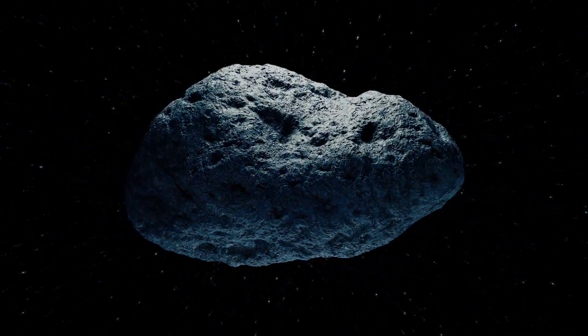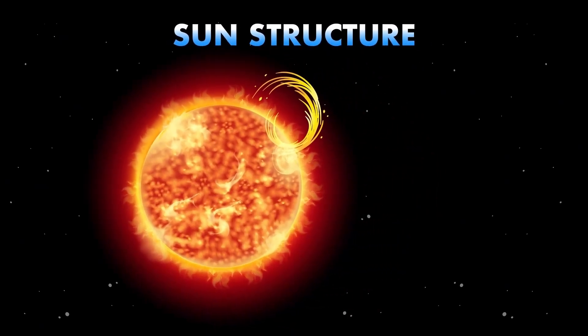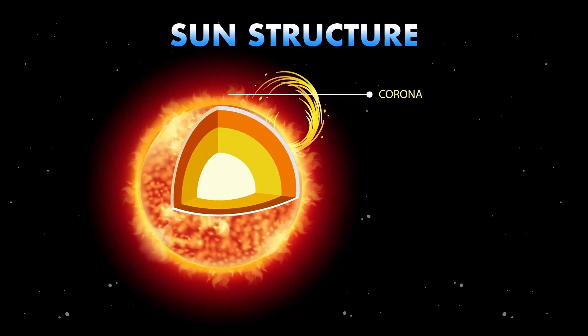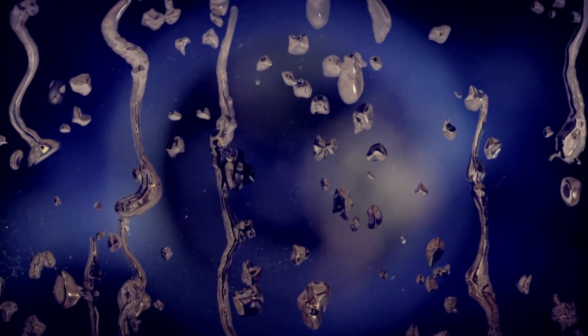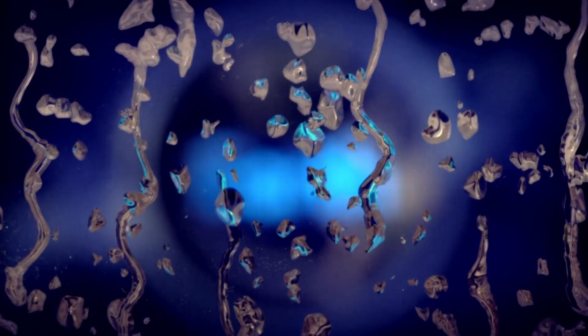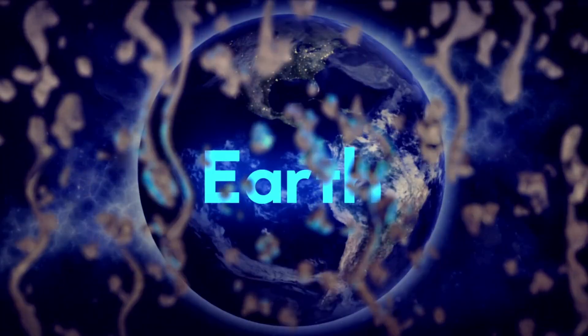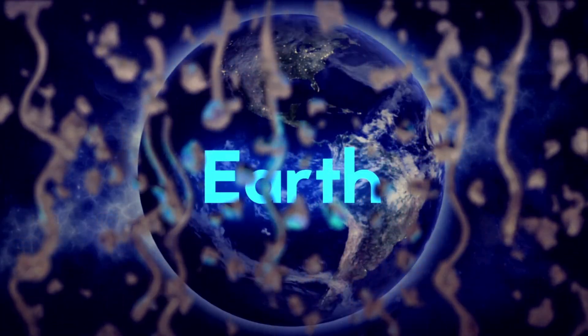Models confirmed that this pattern could help microscopic particles travel vast distances. When traced backward, 3I Atlas appeared to originate near the habitable zone of another star system, possibly Kepler-44, known to host Earth-like planets. If true, this visitor might carry the chemistry of life from another world. It reframed everything. Perhaps life isn't unique to Earth, but part of a universal network of connected worlds.